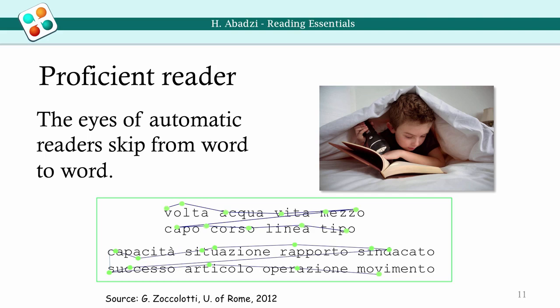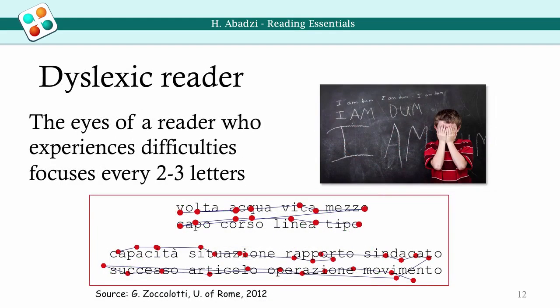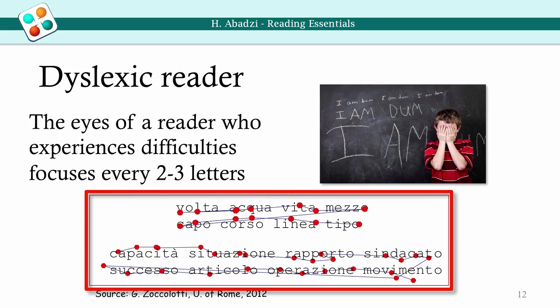The eye movements of automatic or proficient readers are different from those of beginners. In the graphs, a proficient Italian reader, shown in green, focuses about once in every word. By comparison, a reader who experiences difficulties, such as dyslexia, focuses every two to three letters and may go back to re-read.